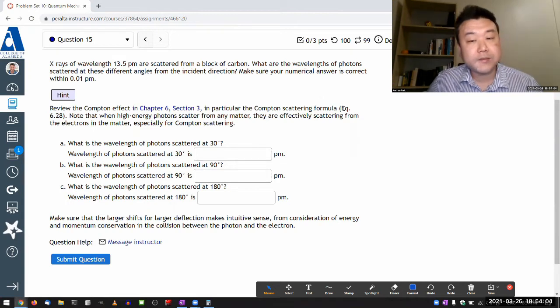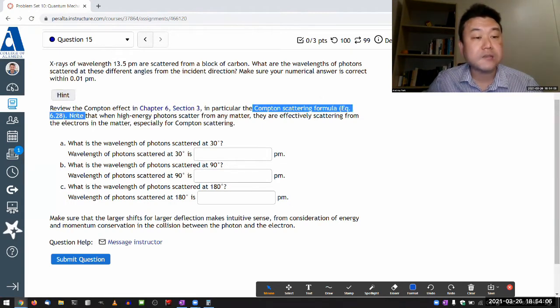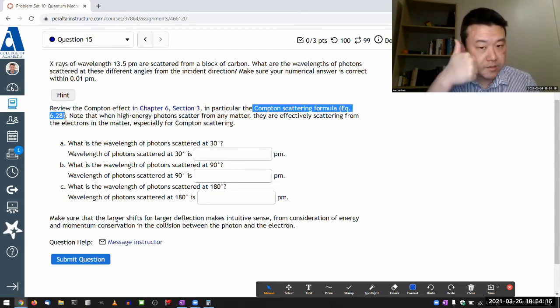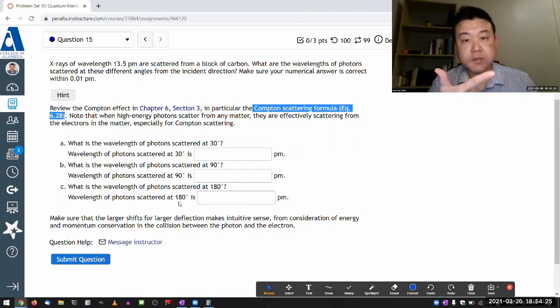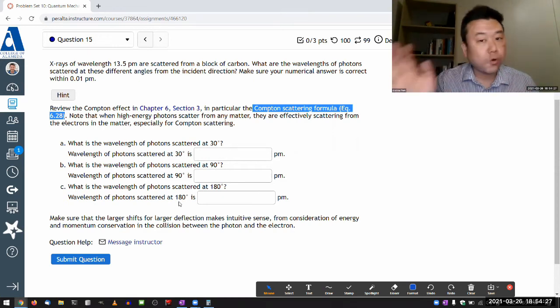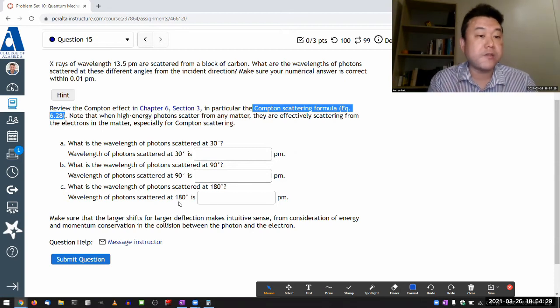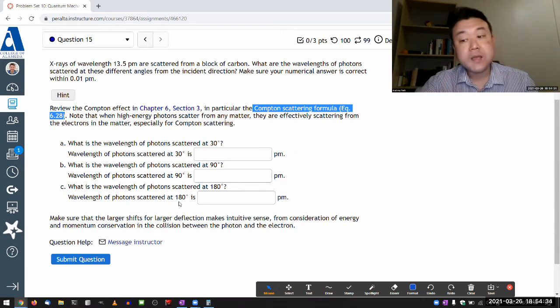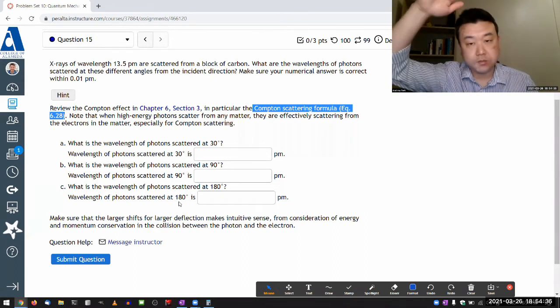Compton scattering formula, again, it takes a lot of effort to derive the formula, but once it's derived, it's quite useful because one, it's quite general, the version that's derived in the textbook handles all these different angles. And two, it takes into account special relativity, which means there are no corrections you need depending on the energy of the photon. It's valid at low limits of the photon energy, and it's valid at high limits of the photon energy.